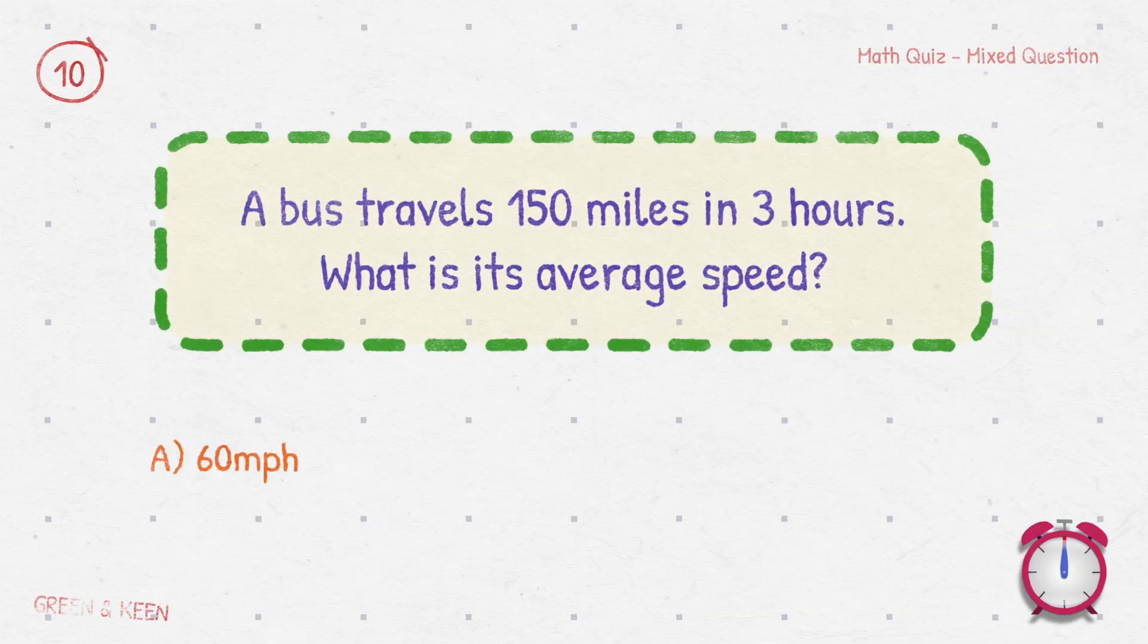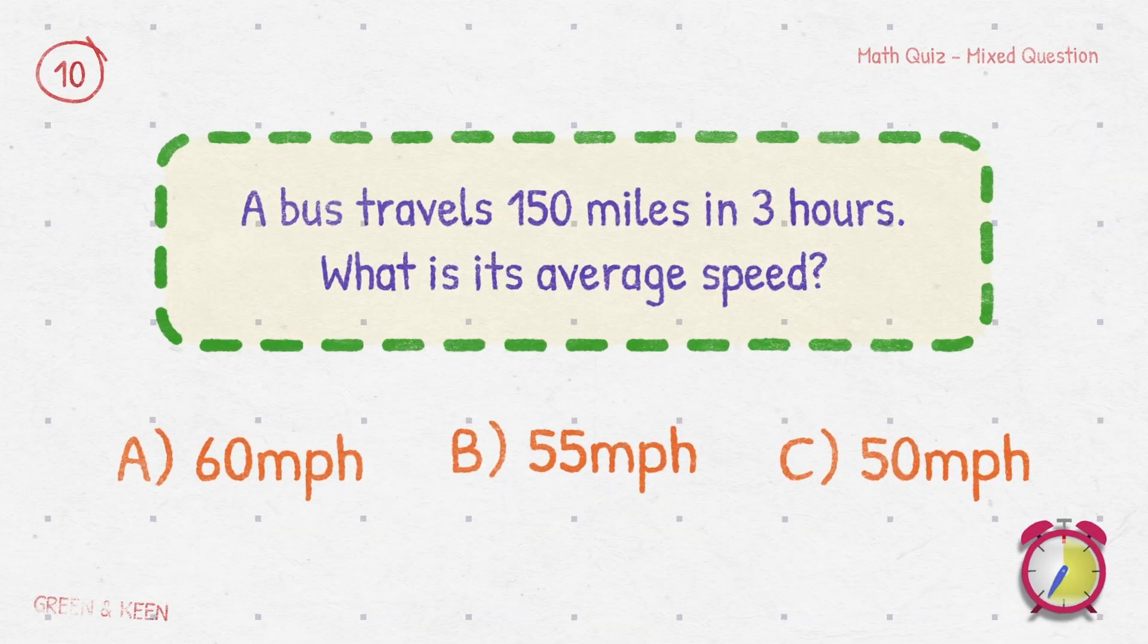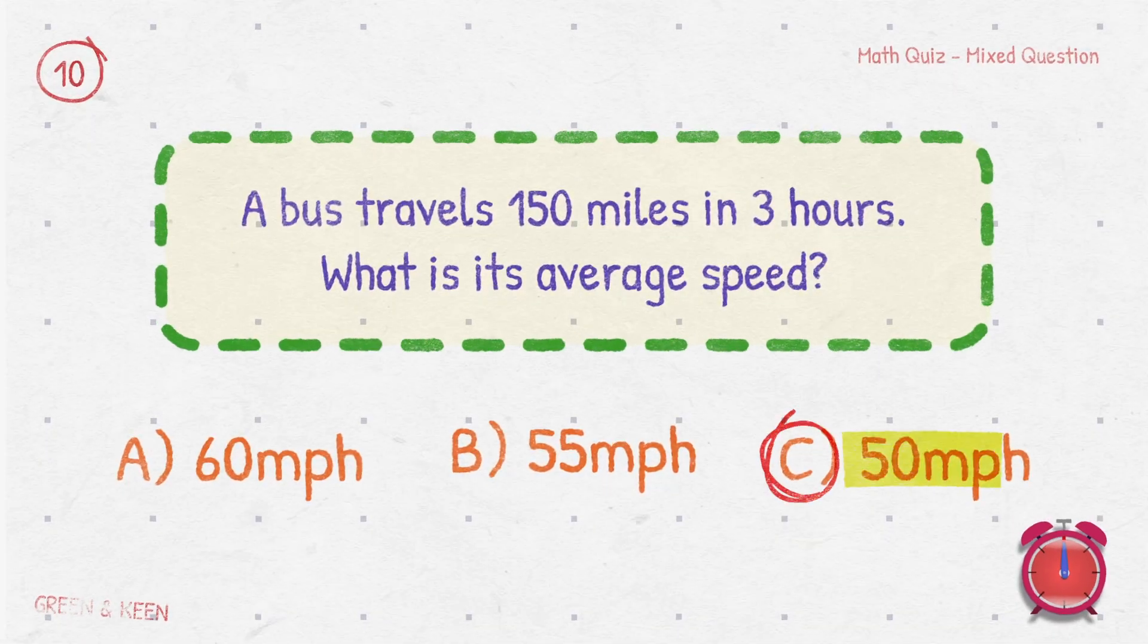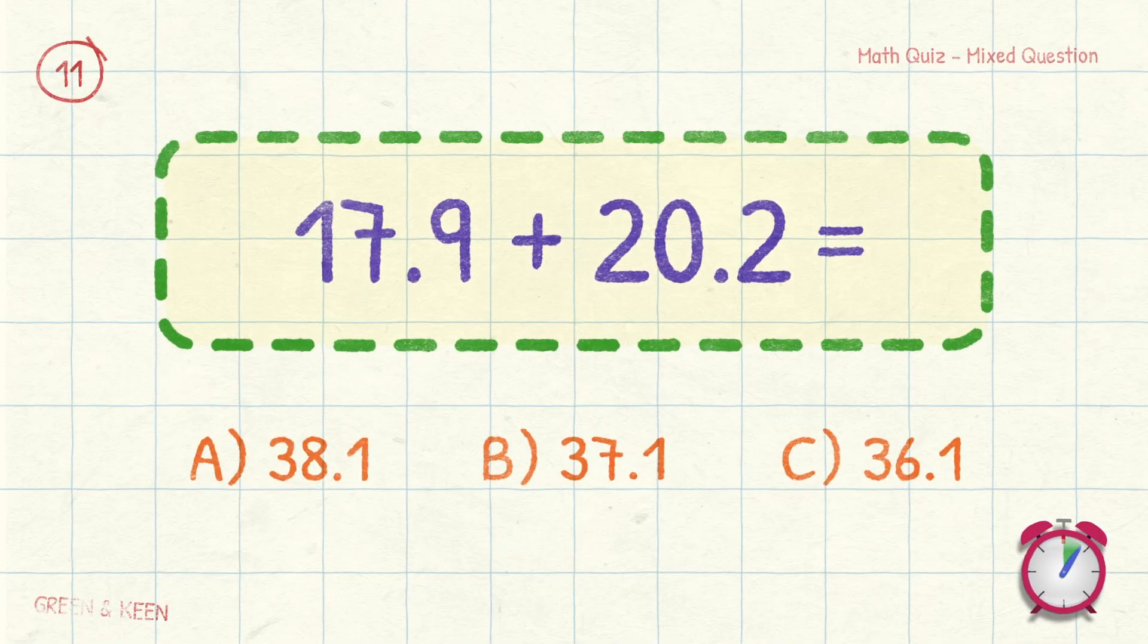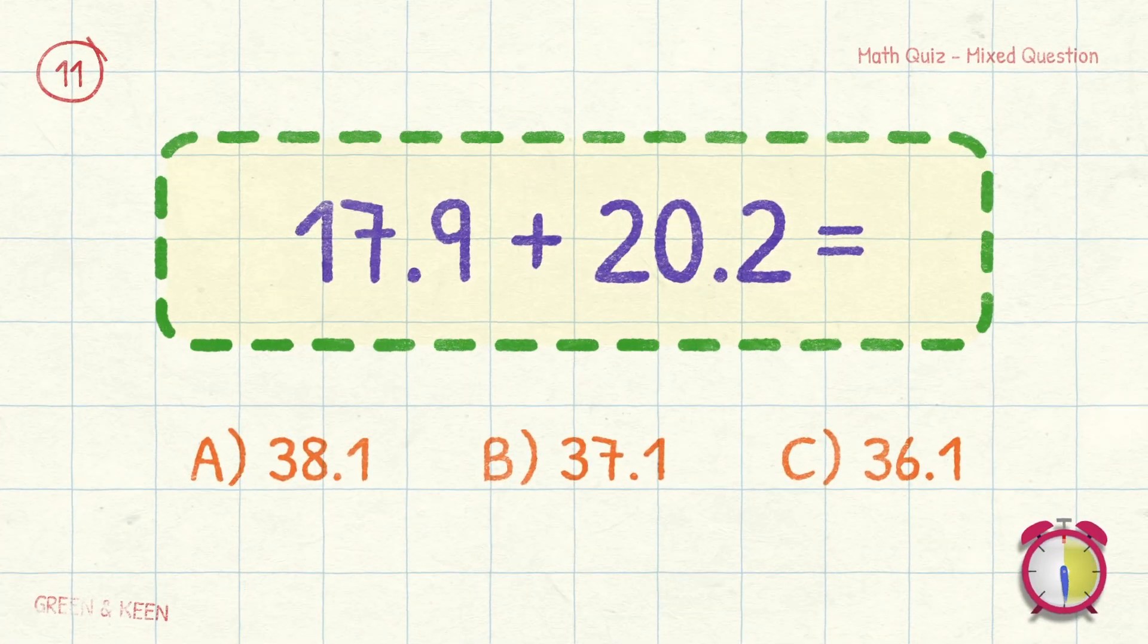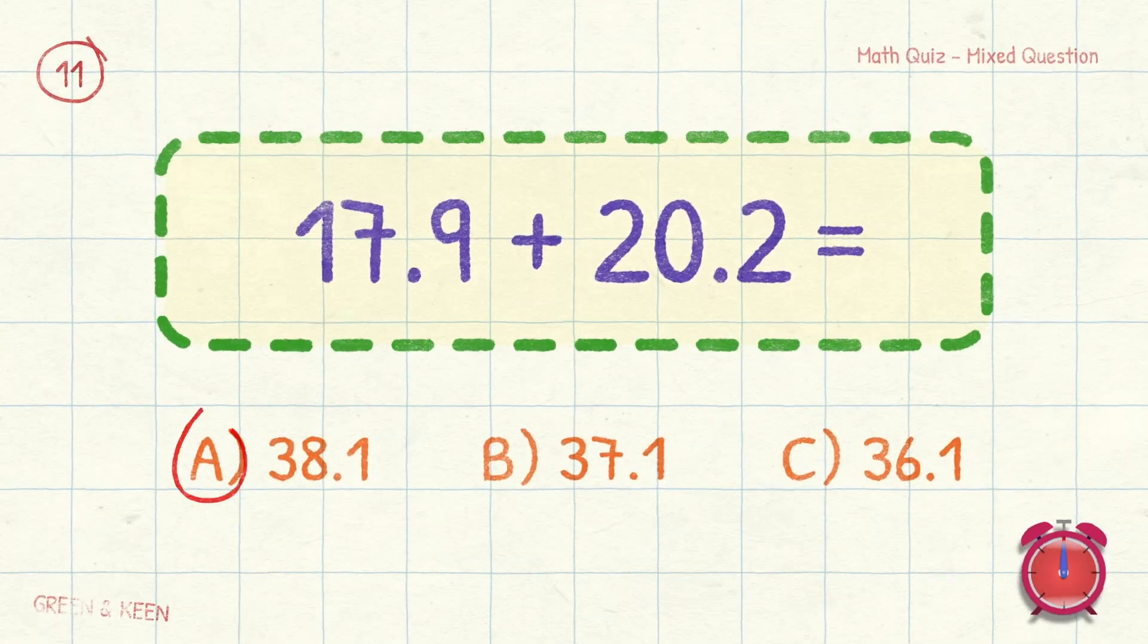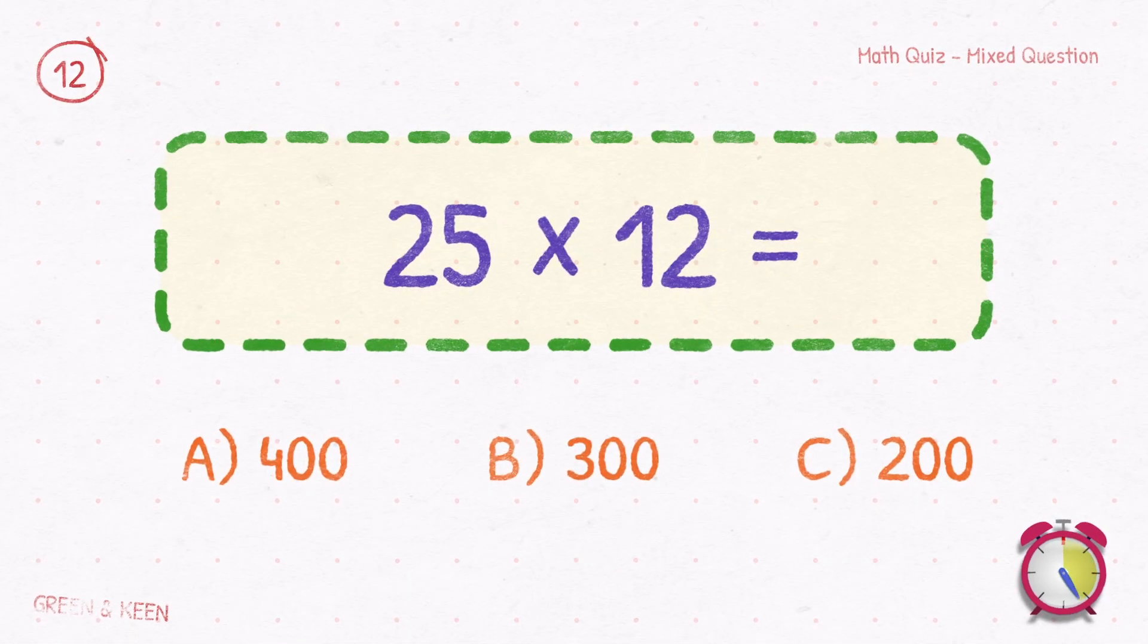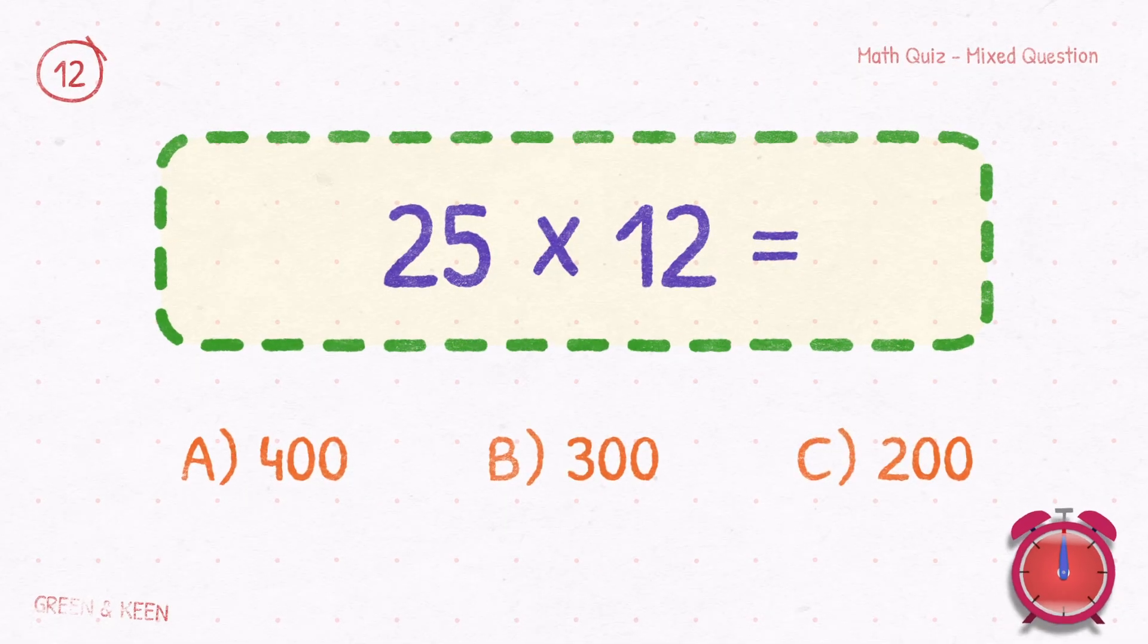A bus travels 150 miles in 3 hours. What is its average speed? 50 miles per hour. 17.9 plus 20.2 equals? 38.1. 25 times 12 equals? 300.